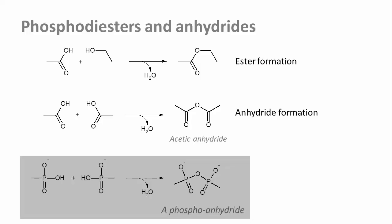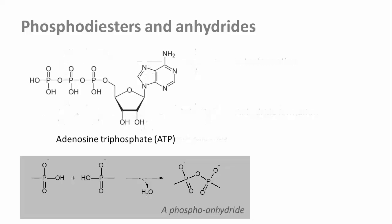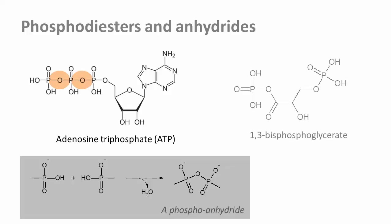ATP, for example — adenosine triphosphate — has two phosphoanhydride links. There are also mixed anhydrides of a carboxylic acid and phosphate, like this molecule, 1,3-bisphosphoglycerate.